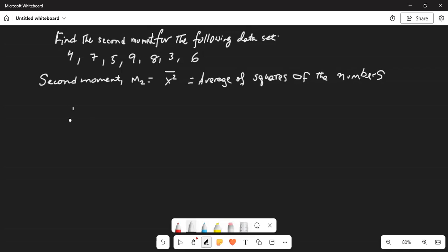So, M2, which is the second moment. The second moment is equal to x2. This is the symbol. Let me write this clearly. This is average.